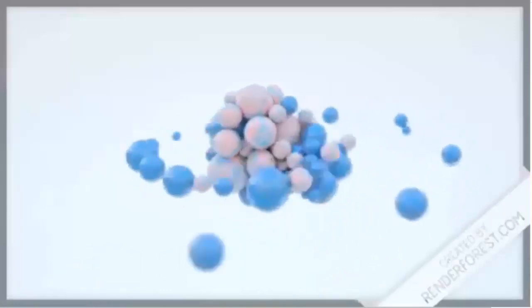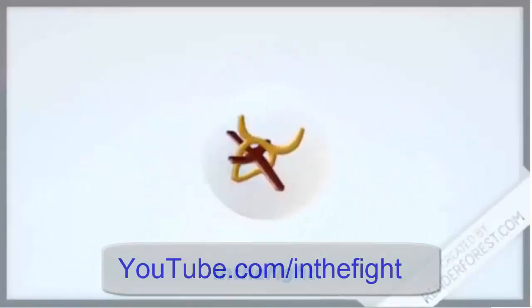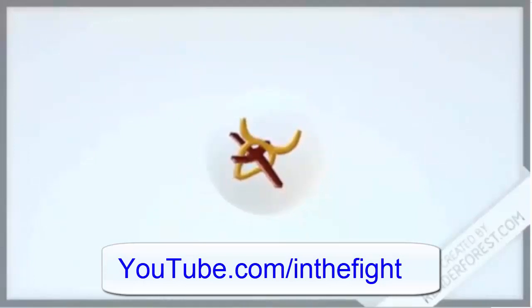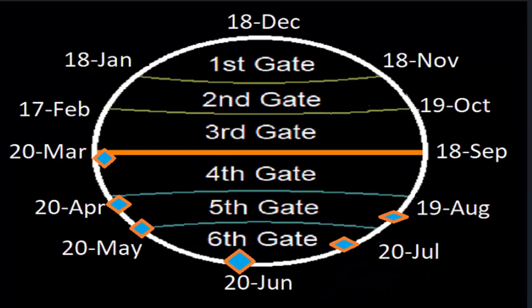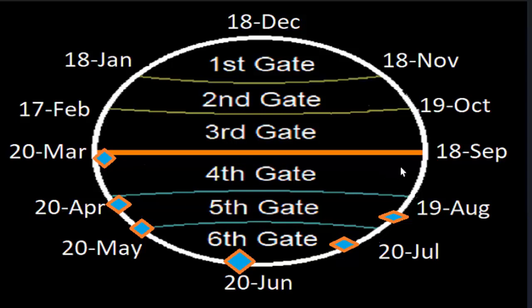Hey y'all, coaching the fight here, and in today's video we're talking about the fast of the fifth month. We're looking here in the Book of Enoch at his description of the sacred calendar. This is important because we're talking about the fast of the fifth month in the year 2023. If you've been following our channel, you can find videos all the way back to 2015 when we started working on deciphering that book.